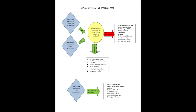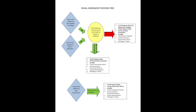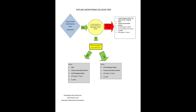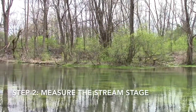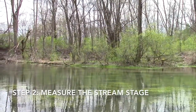If you do see something out of the ordinary, take a picture of the occurrence and follow ALARM's visual assessment decision tree to find the correct agency to contact. The decision trees in ALARM's Shale Gas Manual will help you find what agency is responsible for responding to an incident. Decision trees include information for both possible physical and chemical impacts.